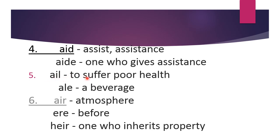Moving on, 'ail' means to suffer poor health — you may have read this in English stories. 'Ale' means a beverage. So 'ail' is to suffer poor health, and 'ale' is a type of drink.